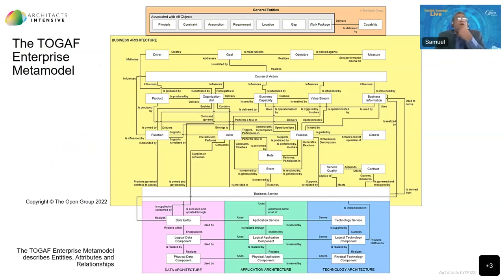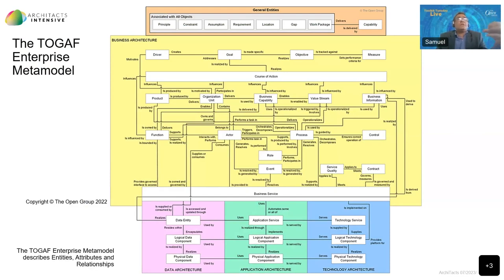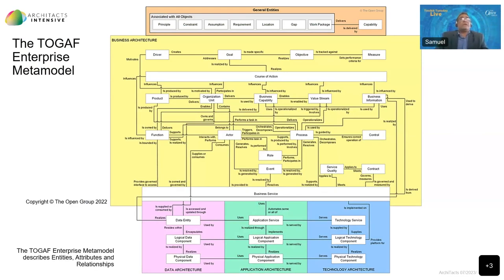Let's look at some of these components. Here you have the enterprise metamodel. This defines the different types of entities that a tool must define for modeling that describe the enterprise. It also describes the relationships between these entities. The content produced using this metamodel across the ADM would be stored in a repository — and TOGAF also gives you a structure for the repository, which defines a formal taxonomy for different types of architectural assets alongside dedicated processes and tools for your content storage.